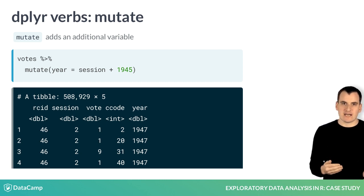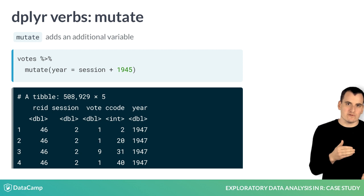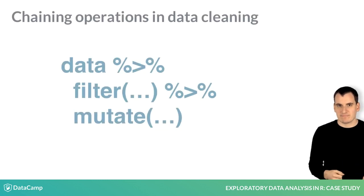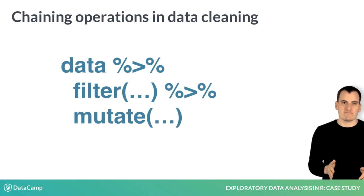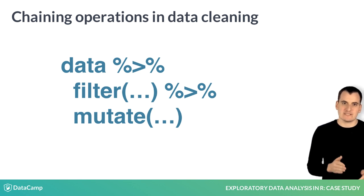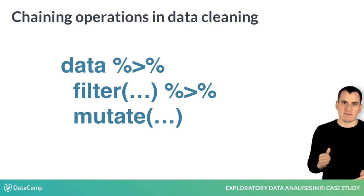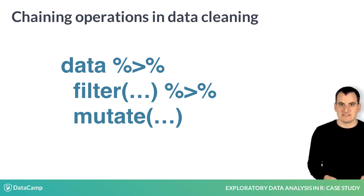In your exercises, you'll also clean up the country column to include full country names instead of IDs. The pipe operator lets you chain these simple actions together in a sequence. You'll get into the habit of piping many small, simple operations together to perform a richer analysis.